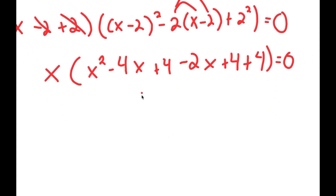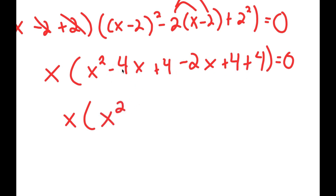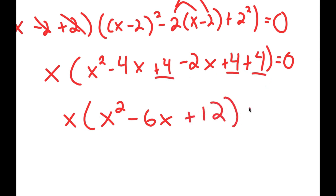From here, we can simplify what's in the parentheses. So I get x times x squared minus 4x plus 4 minus 2x plus 4 plus 4. This simplifies to x squared. Negative 4x minus 2x is negative 6x, and I'm left with plus 4 plus 4 plus 4, which is plus 12. This is equal to 0.